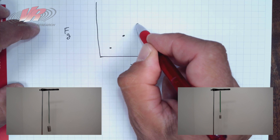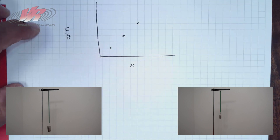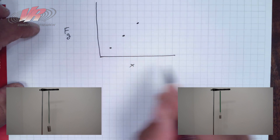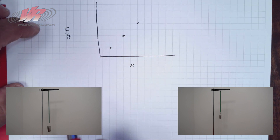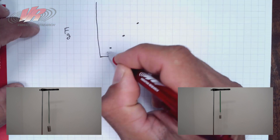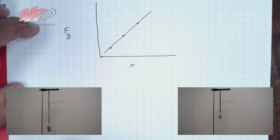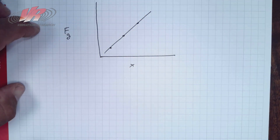More mass and therefore more force of gravity stretches a greater distance. If we continue to plot various masses, the force of gravity on those masses compared to the stretch, we're going to find a linear relationship.